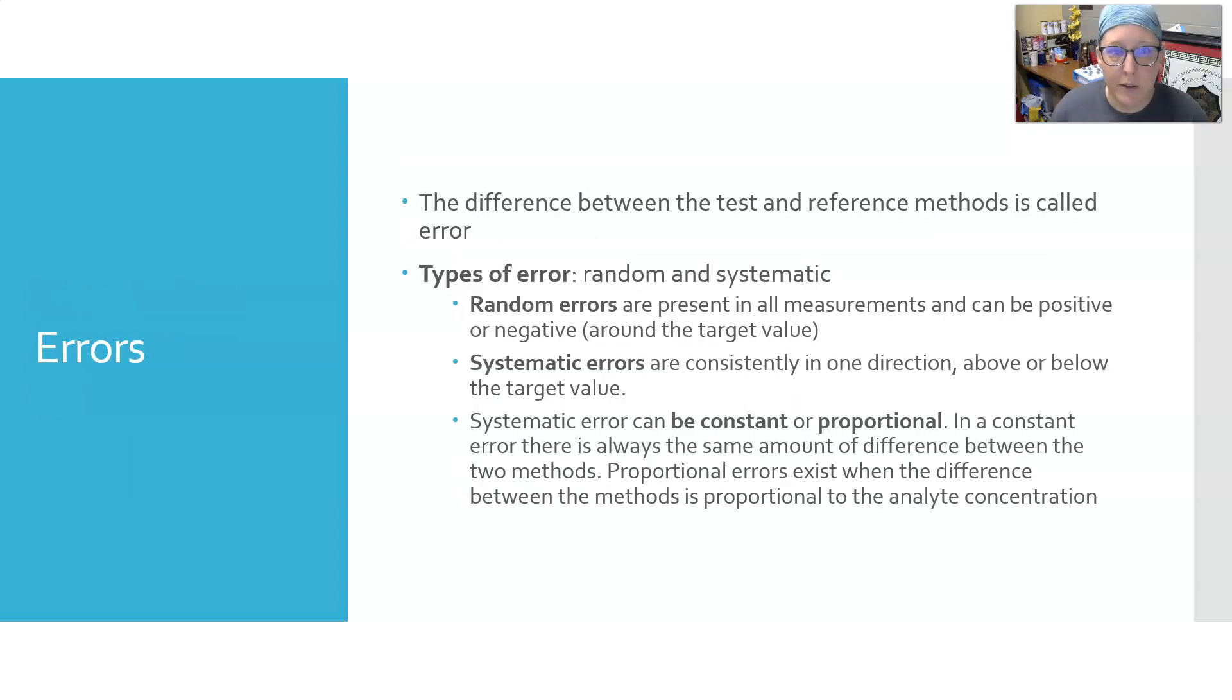The difference between the test and the reference method is called the error. Errors can be random or systematic. Random errors are present in all measurements and can be positive or negative - higher or lower than the target value. The target value for any sample is its actual concentration of the analyte you are measuring. If the actual concentration in the sample is 85 milligrams per deciliter, you want your analyzer to read 85 milligrams per deciliter. Random errors cannot be predicted.